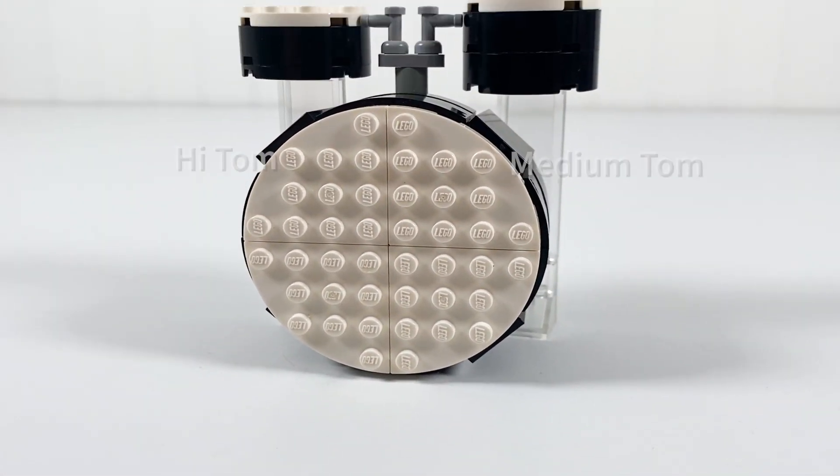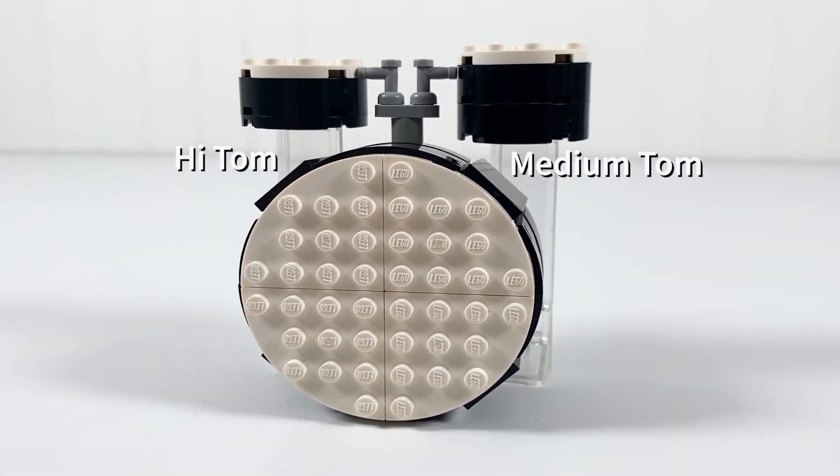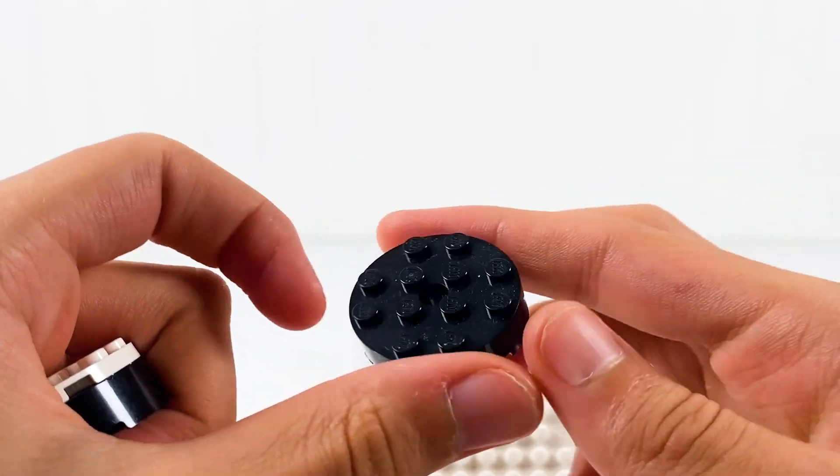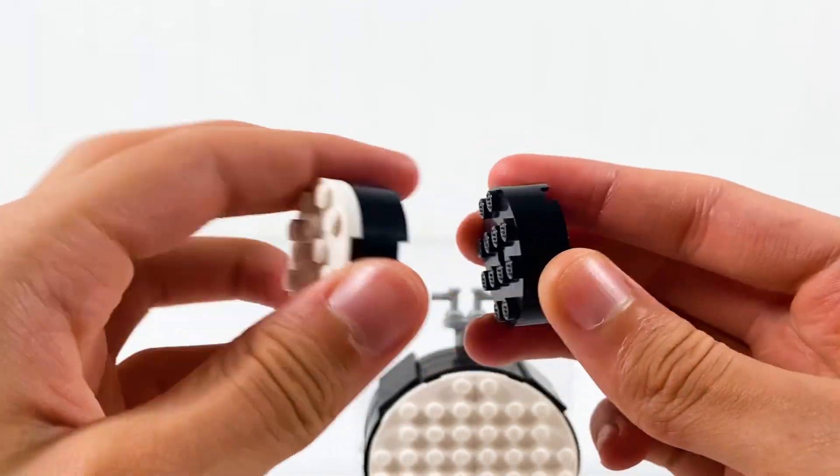This is the connector between the high tom and medium tom drums. These drums were easier and I just used these 4x4x1 circle bricks.